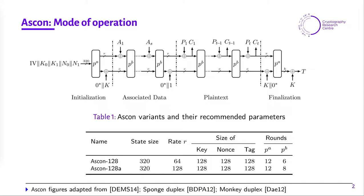During the initialization and finalization phases the number of rounds is P_A. Based on the amount of data ASCON processes — which is R bits per call of the permutation — and the number of rounds, there are two variants of ASCON: ASCON-128 and ASCON-128A. The only difference is in the rate R and the number of rounds of P_B.